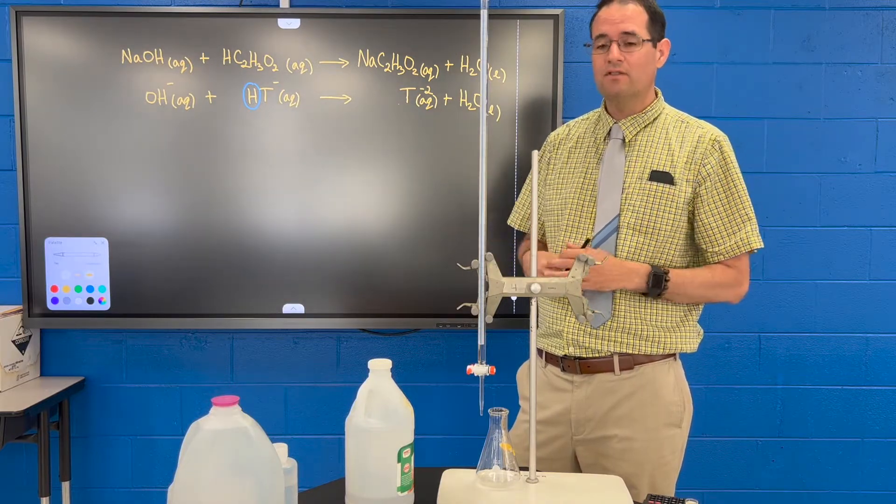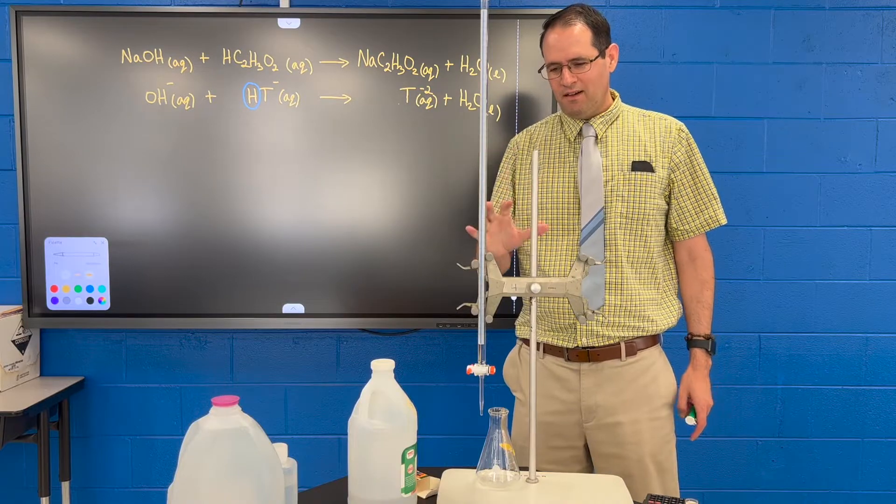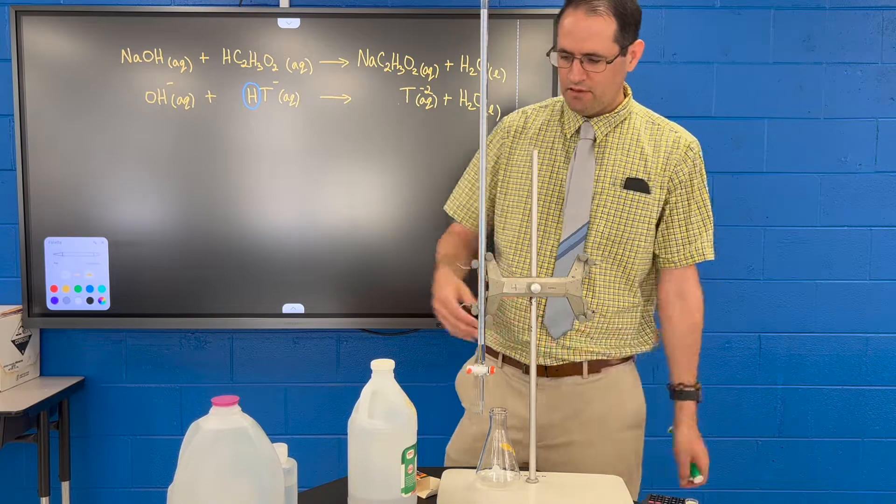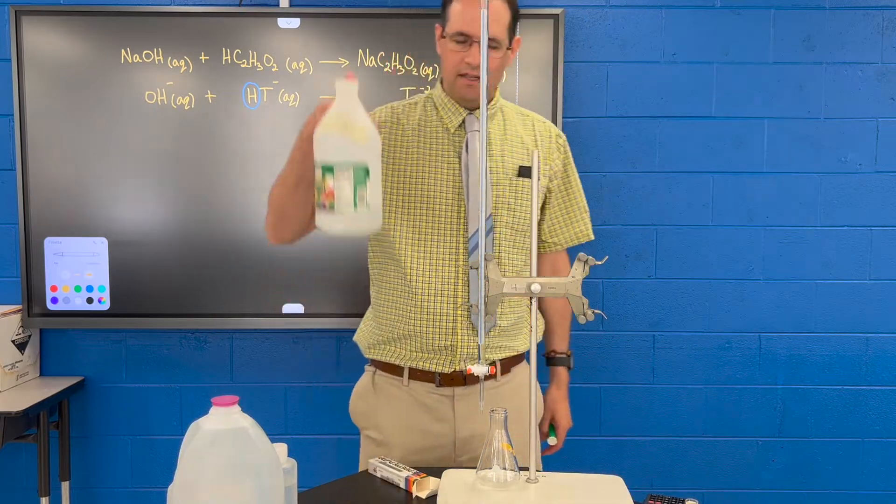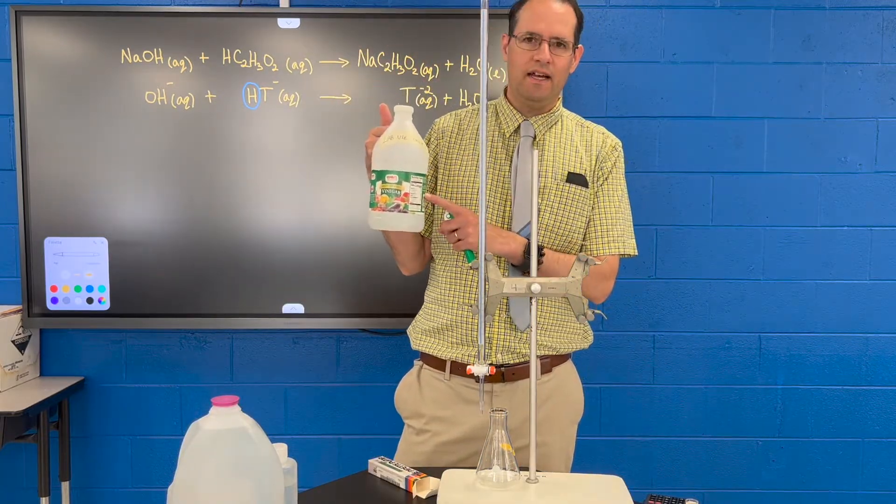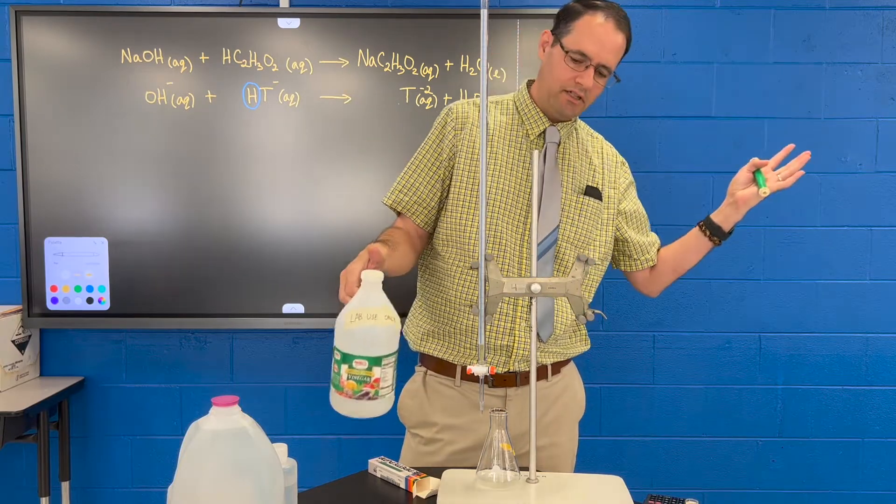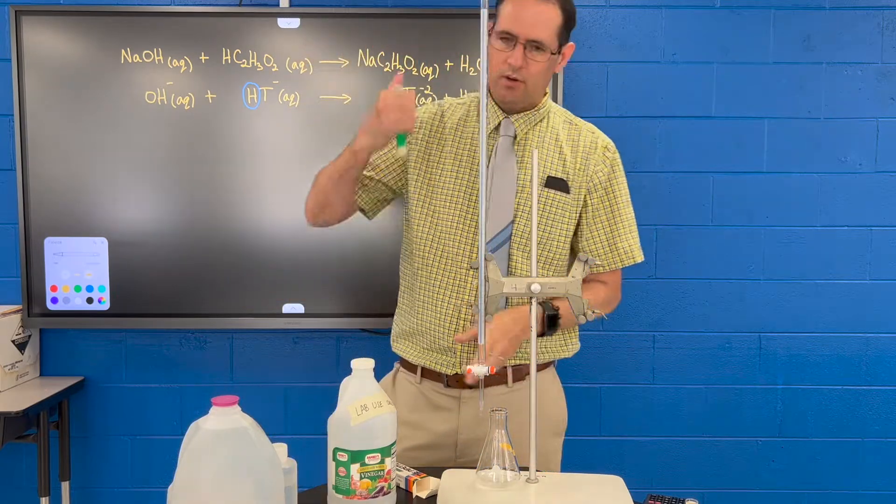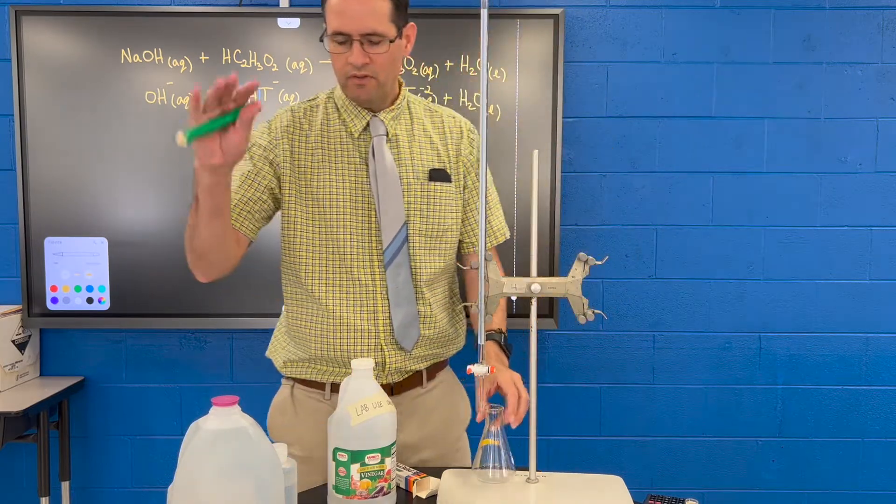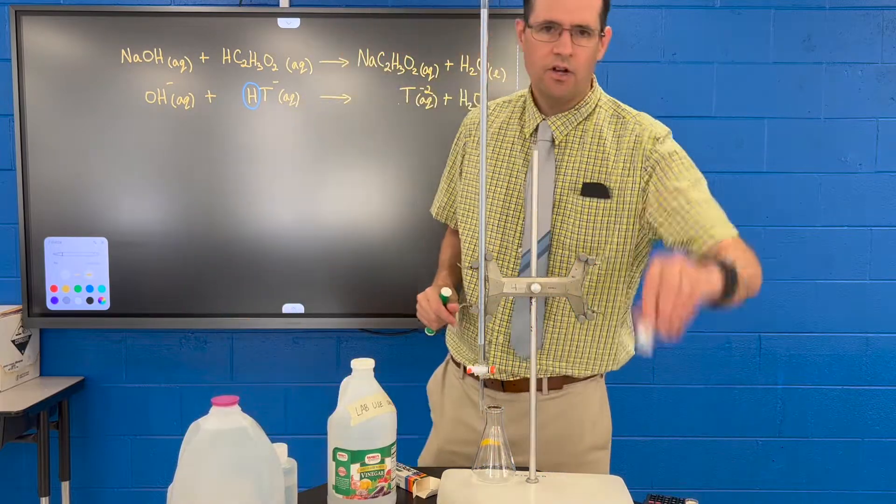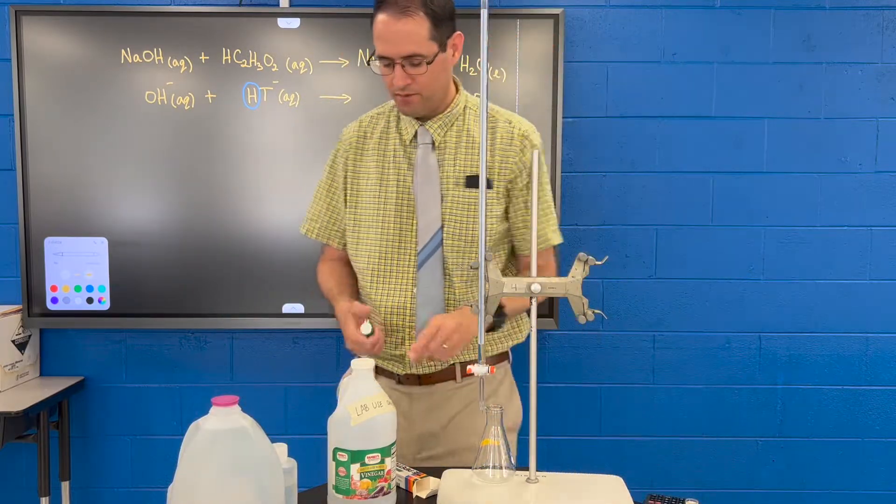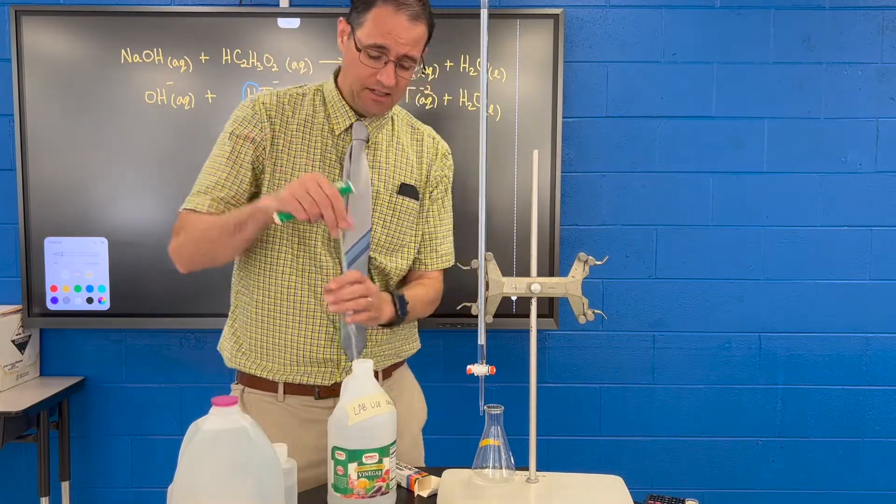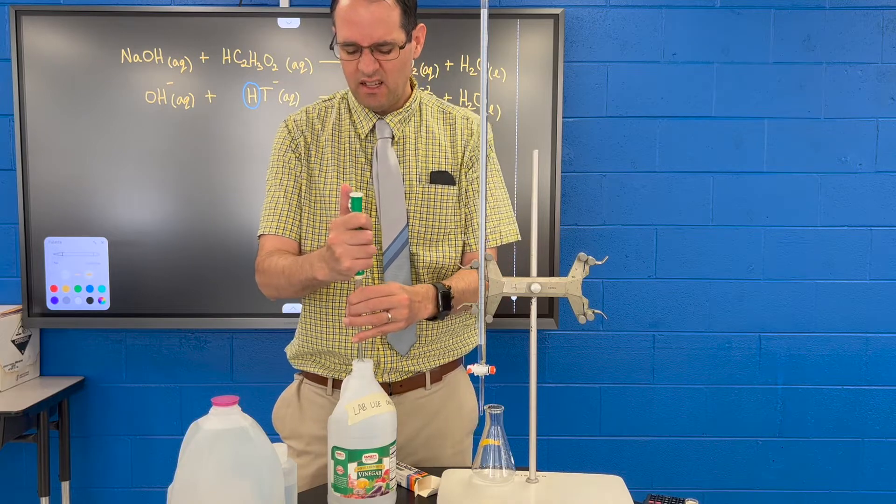Alright, so now let's talk about the experiment a little bit. What you're going to do or see me do if you're watching the video demonstration on the online class is take a known concentration of the acetic acid, which is the same as the potassium hydrogen tartrate, probably with a pipette, and we're going to add that to an Erlenmeyer flask along with some water and a drop or two of the phenolphthalein indicator.